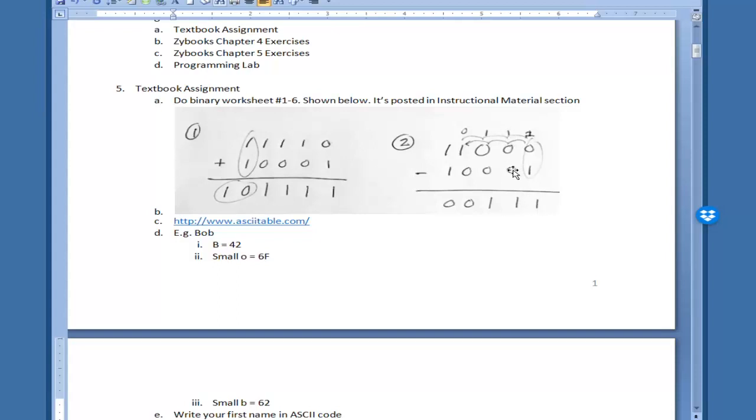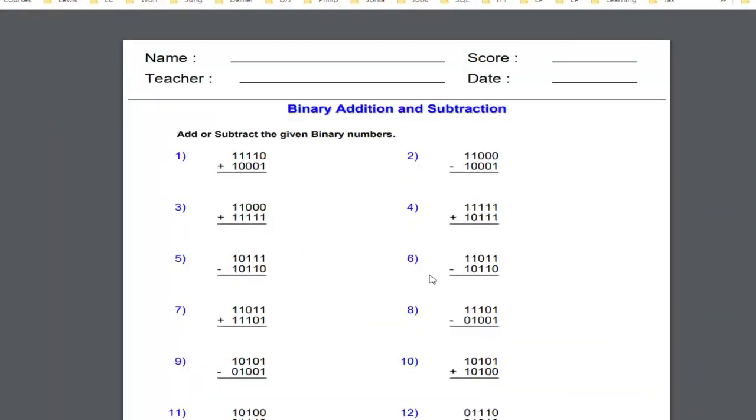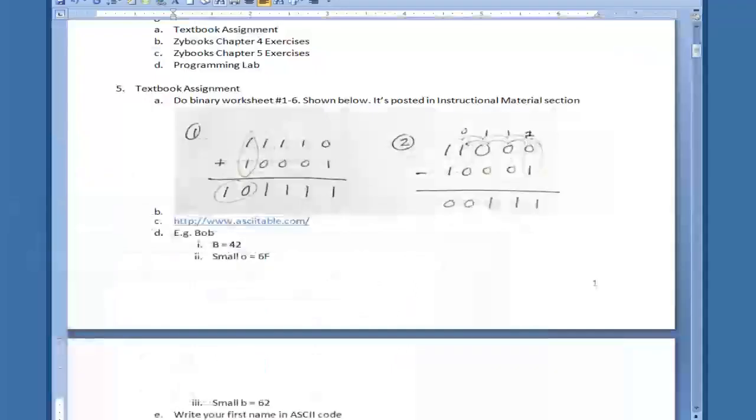Two minus one gives you one, and then one minus zero is one, one minus zero is also one. This is zero because we gave that away. Zero minus zero would be zero, and one minus one would be zero. The answer is 0001111. Do the other four, and I gave you binary converters last time to confirm your answer.